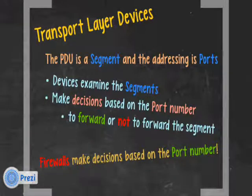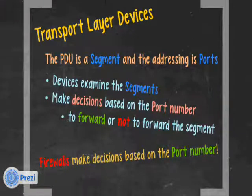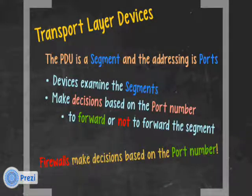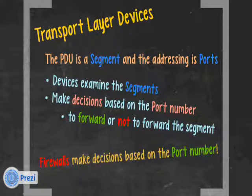Transport layer devices: the PDU is a segment and the addressing is ports. Devices examine the segments and make decisions based on the port number to forward or not forward the segment. Firewalls make decisions based on the port number. You might have a firewall that only allows traffic in to port 80 for a web server, port 443 for a secure web server, port 25 for email, or ports 20 and 21 for FTP — and blocks everything else.